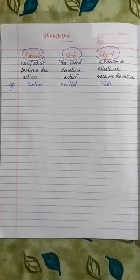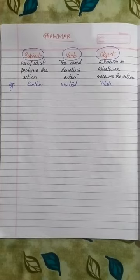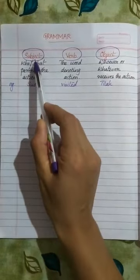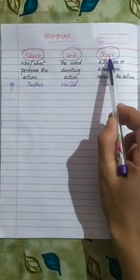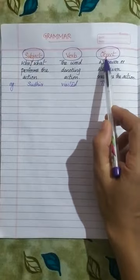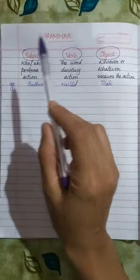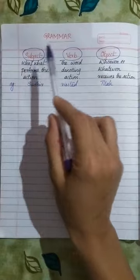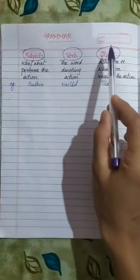Do you know that a sentence usually consists of three elements? What are they? The three elements of a sentence are subject, verb and object.